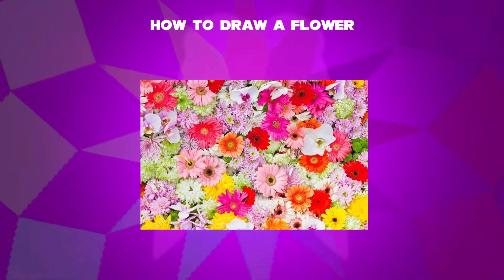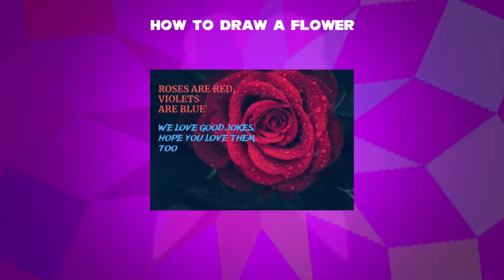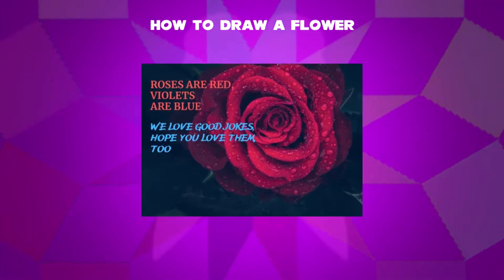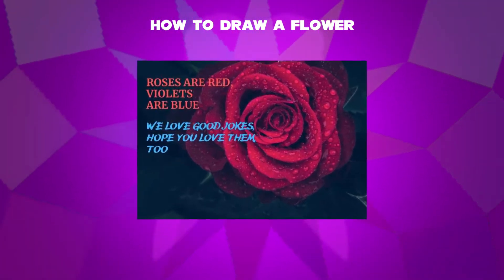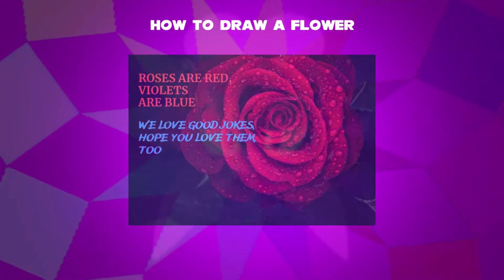For example, a rose. Even small children from nursery could learn the poem of roses are red and violets are blue. We will show you how to draw.